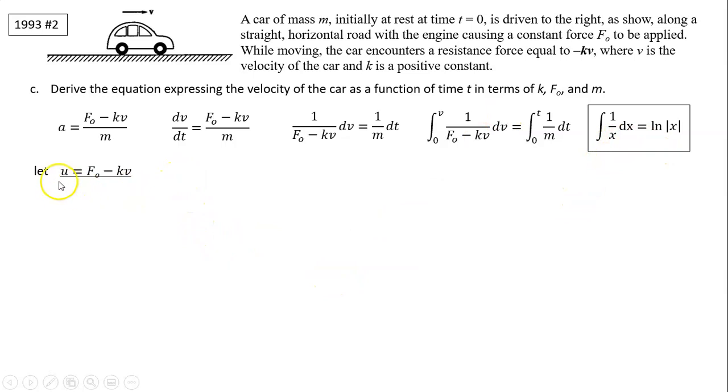So it's time for u-substitution. Let u equal the term on the bottom, F0 minus kv. The problem is this is 1 over u and this is dv. We have to use dv in terms of du. So to do that, we derive this equation relative to v: du over dv equals 0 because F0 is constant, minus k because dv over dv is just 1. So that gives you negative k. From here, we solve for dv. dv is negative 1 over k du. We can substitute dv in the term over here.